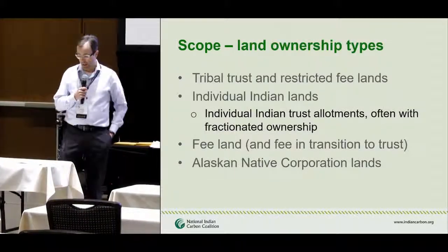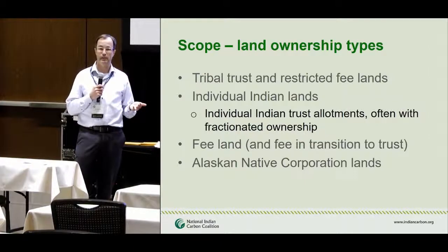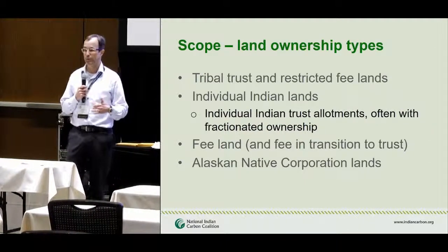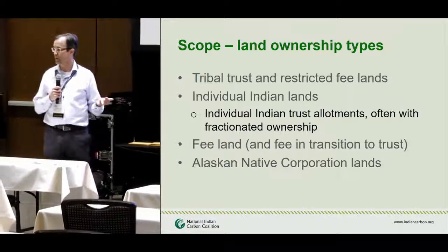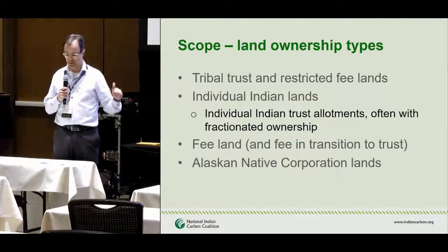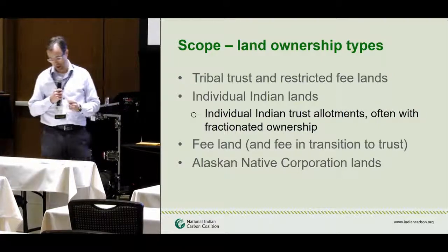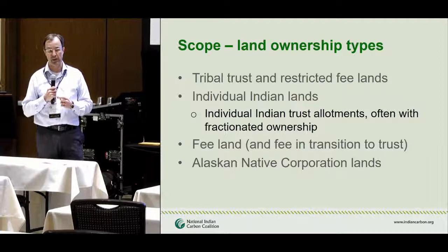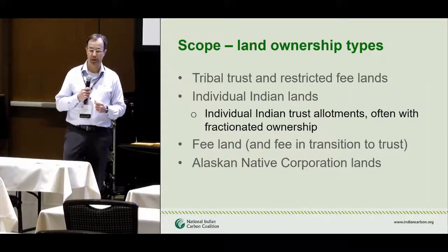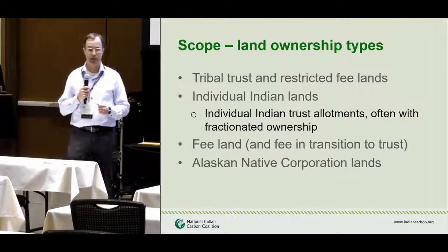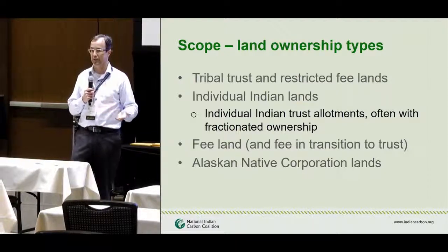The guidance addresses multiple land ownership types: tribal trust lands and restricted fee lands, individual Indian-owned trust allotments (with challenges around fractionated ownership), fee lands (which are essentially similar to non-Indian land projects, though some tribes are transitioning fee lands into trust status), and Alaska Native Corporation lands. Each type has different considerations and requirements addressed in the guidance.